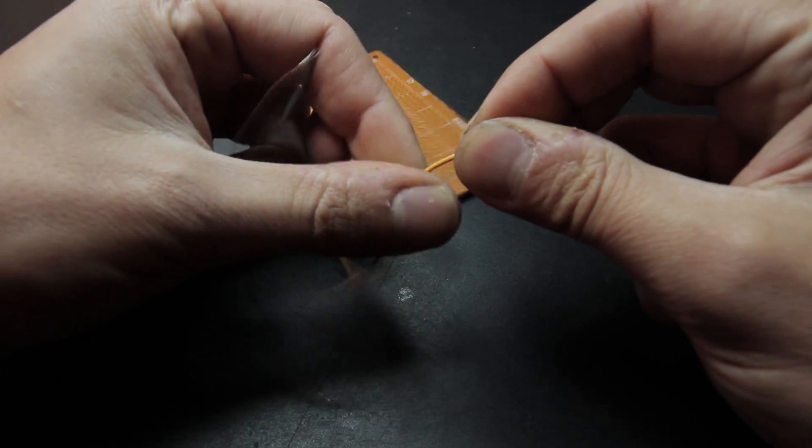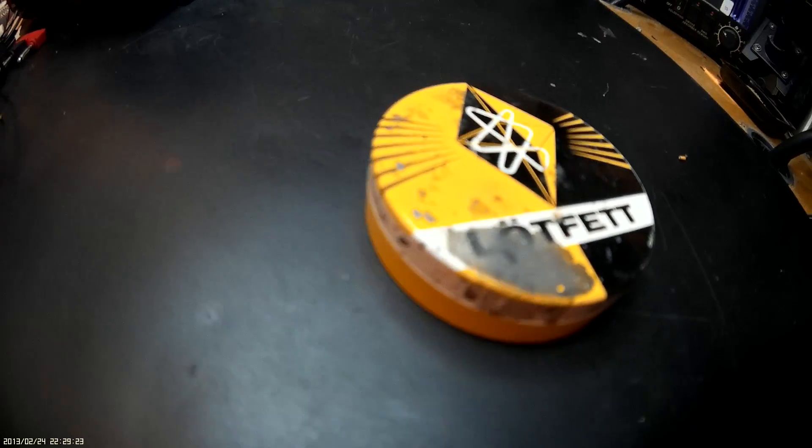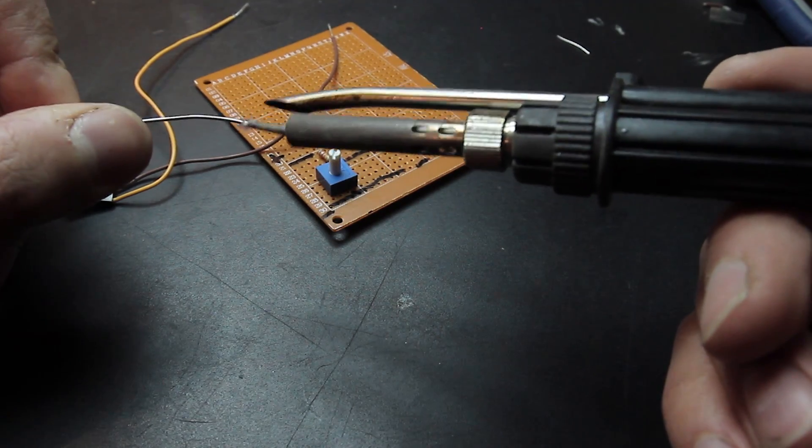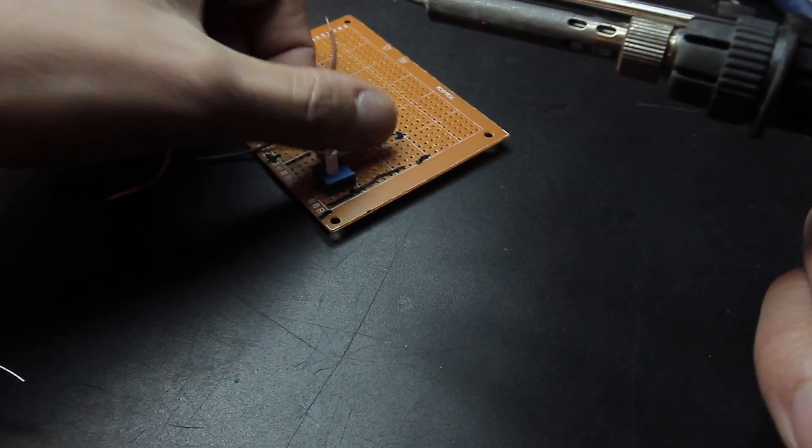Some flux can help you to pre-thin the wires before you connect them to the sensor board. In this case I use the yellow wire for the positive and the brown wire for the negative connection.